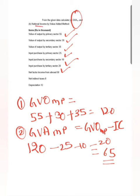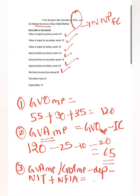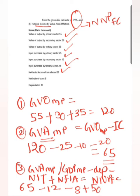Here we need to find national income, which equals NNP at FC. From GDP at MP, we first subtract depreciation, then subtract net indirect taxes, and add NFIA to get NNP at FC. Thus: 75,000 minus depreciation of 12,000, minus net indirect taxes of 8,000, plus NFIA of 50,000 gives us national income of 95,000.